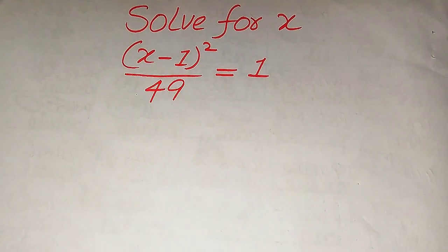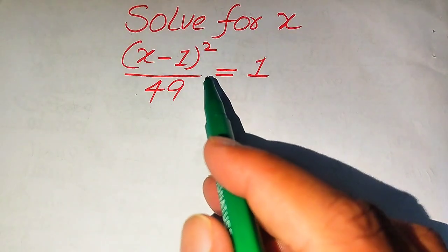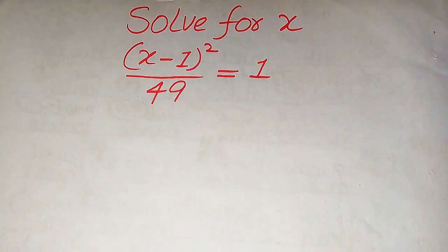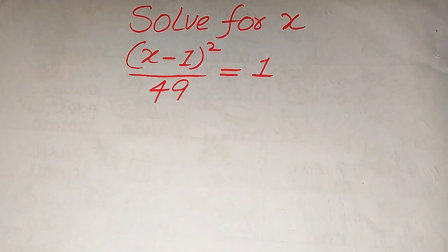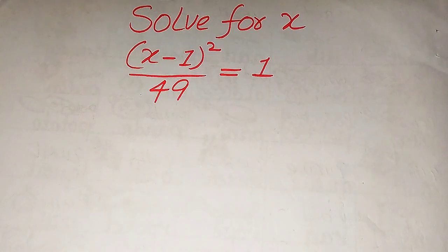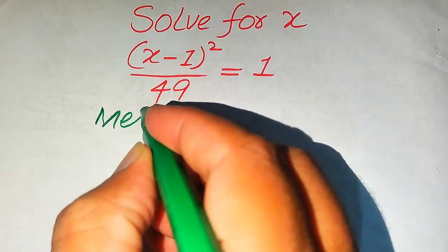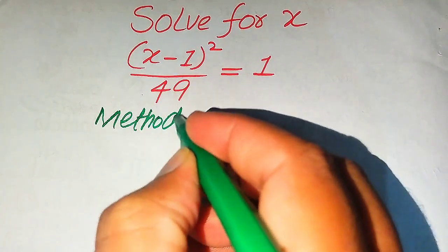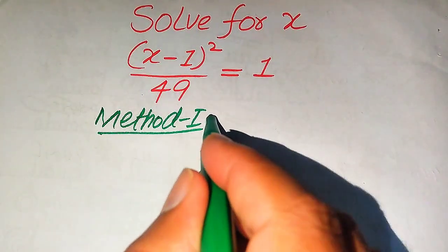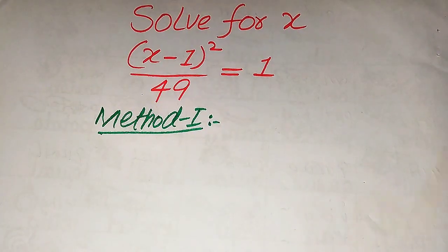Hello everyone. How to solve this problem for the values of x, if we have (x minus 1) whole square divided by 49 equals 1. First we find all the roots of this equation, and at the end we will verify which of the roots are solutions and which are extraneous roots. We solve this problem using two methods — I hope you like both of them, but if you have any other method in mind, please write it in the comment section.